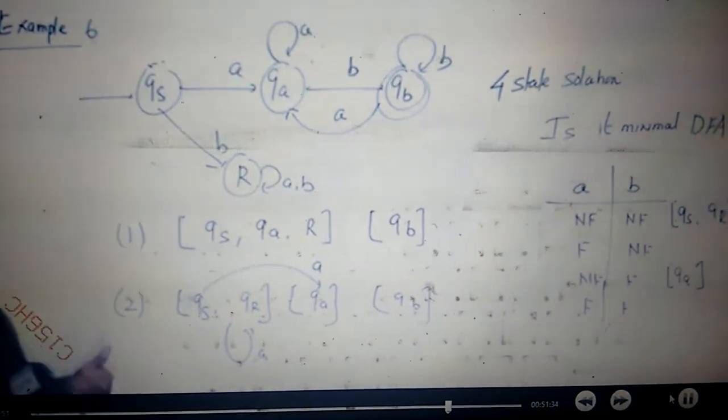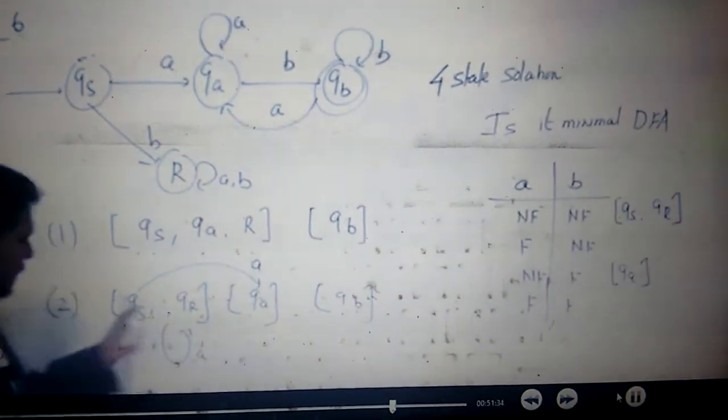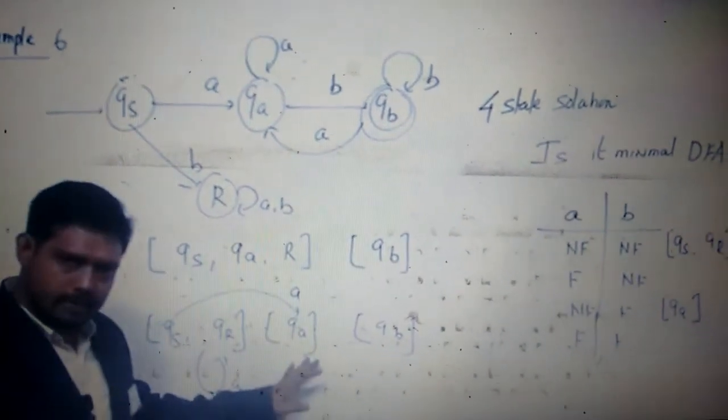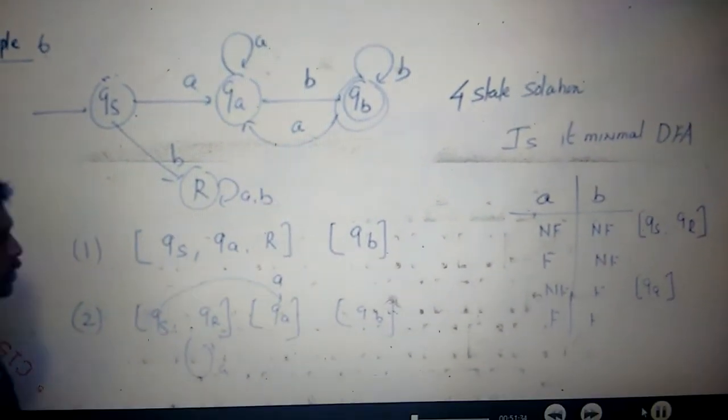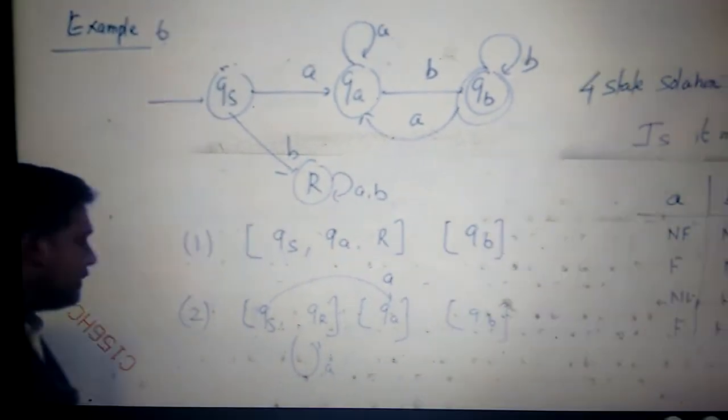But in this case, I'll check QB on B. One is going into this partition, and one is making a self-loop. That means QS and QR cannot be in the same partition.